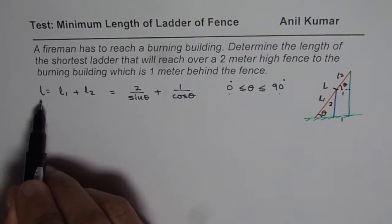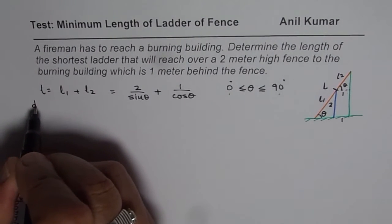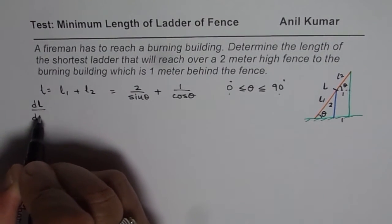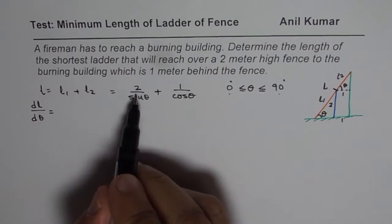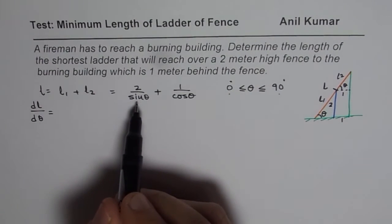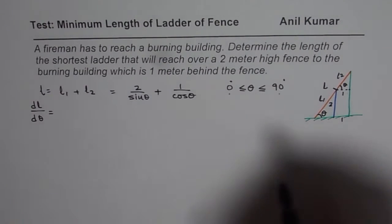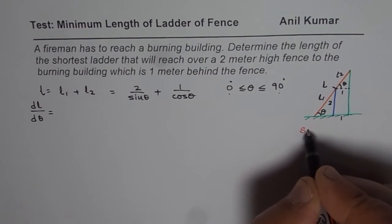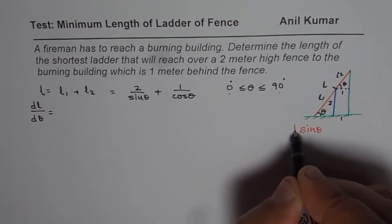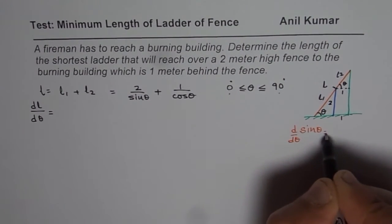Now once we know that this is the function, we can find the derivative of this function with respect to theta. So we have dL/dθ as equals to derivative of this function. We can apply the quotient rule. As you know, what is the derivative of sine theta? Derivative of sine theta is d/dθ of sine theta is cosine theta.